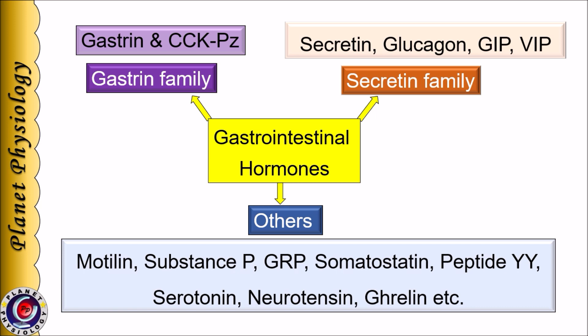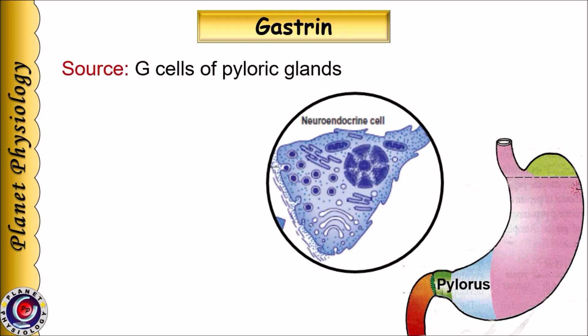Hormones like motilin, substance P, GRP, somatostatin, peptide YY, serotonin, neurotensin, ghrelin, etc. do not fit in either of these two families and hence are included in others. There are more than 15 types of enteroendocrine cells in the GI tract — like G cells, S cells, and I cells — that secrete only one type of hormone, whereas enterochromaffin or ECL cells secrete serotonin and histamine. Let us begin with gastrin. It is secreted by G cells of pyloric glands. These are flask-shaped cells with the apex facing the lumen of the gland; microvilli are present on the apex and possess receptors.